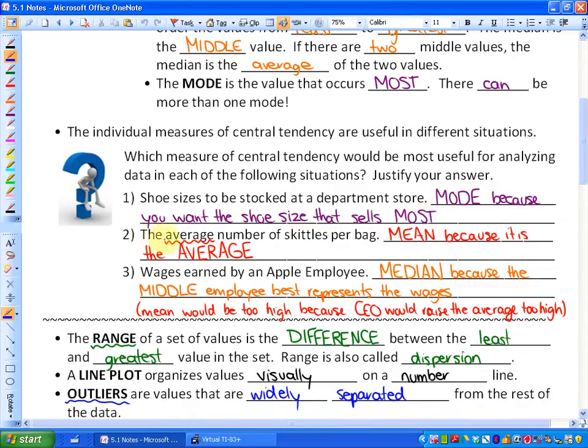Number two: what would analyze the average number of Skittles per bag? Well, the word average is there, so that one kind of gives it away. The mean, because it is the average, would be the best for analyzing that.